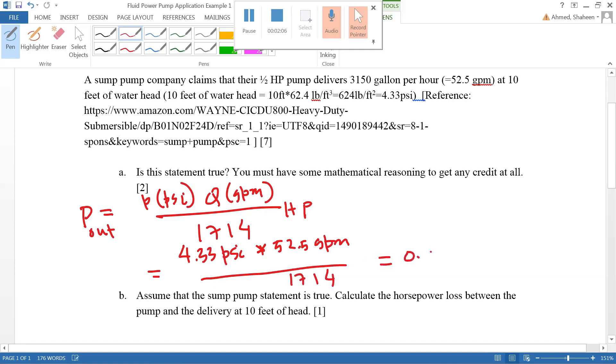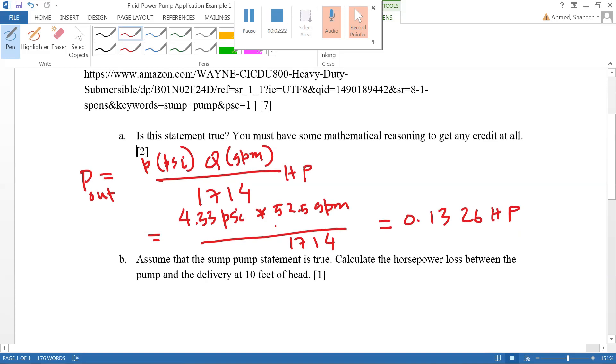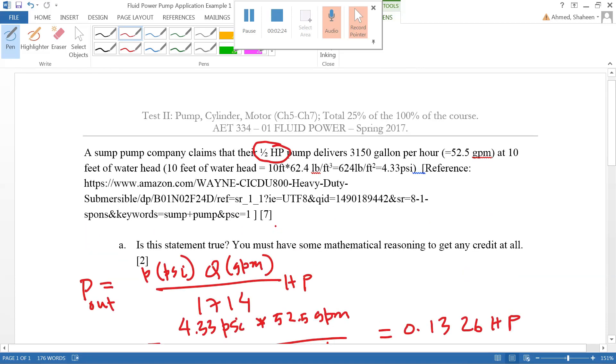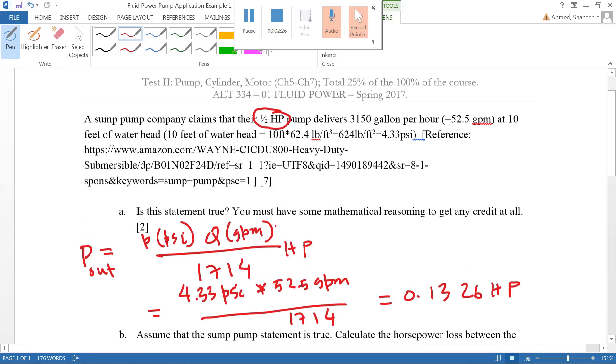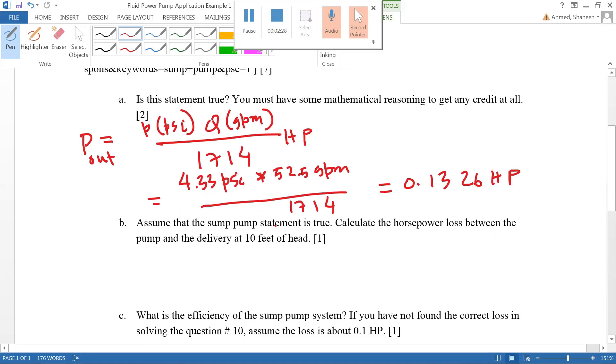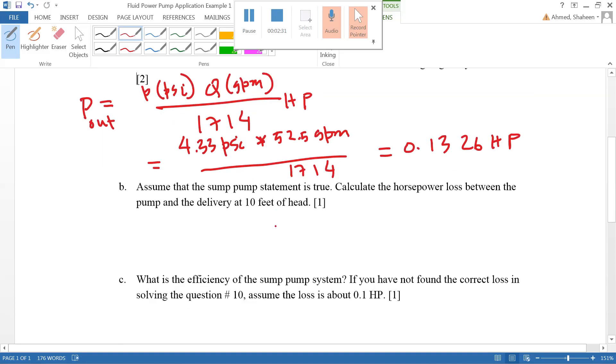That's psi times the flow rate which is 52.5 gallons per minute divided by 1714, which equals 0.1326 horsepower. It's definitely not mercury because mercury is 10 times heavier. The pump is only half horsepower, so that's the horsepower it's developing. It claims it's a half horsepower pump. I don't know if the pump has this low efficiency.